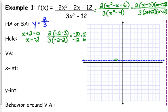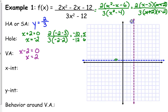Next: vertical asymptotes. Our denominator, after canceling, is left with 3(x − 2). The 3 doesn't matter because 3 ≠ 0, so we're only concerned with x − 2 = 0. That means we have a vertical asymptote at x = 2. Go ahead and put your vertical dotted line at x = 2. You should now have a horizontal dotted line, a vertical dotted line, and a hole on your graph.